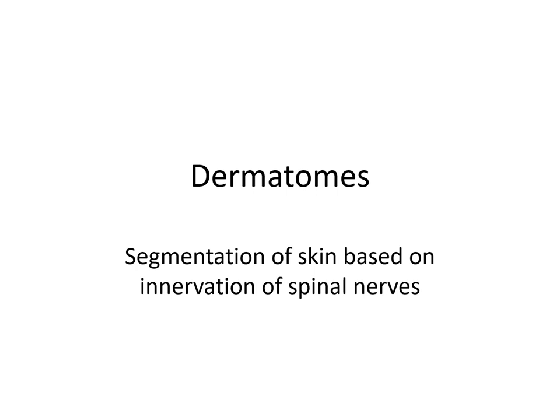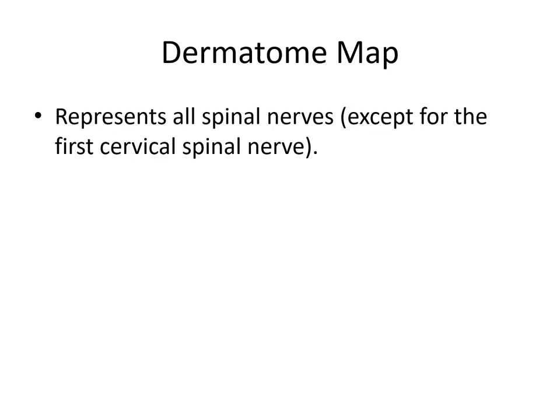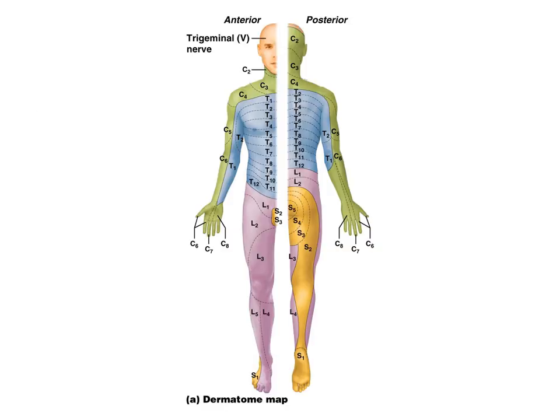Dermatomes are segmentation of the skin based on the innervation of the spinal nerves. You can map the surface of the skin and reference the innervation of the spinal nerves, except for the first cervical spinal nerve. This allows you to see which spinal nerves innervate each part of the body.